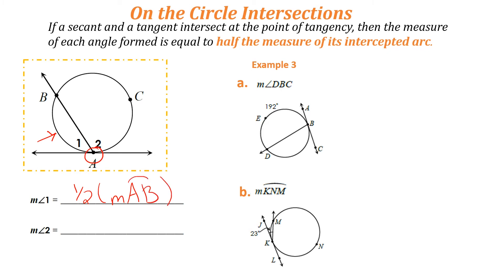Arc AB is a minor arc, less than 180 degrees, so we name it with two letters. For angle 2, the intercepted arc is the major arc BCA, so the measure of angle 2 is one-half the measure of arc ACB, or arc BCA.